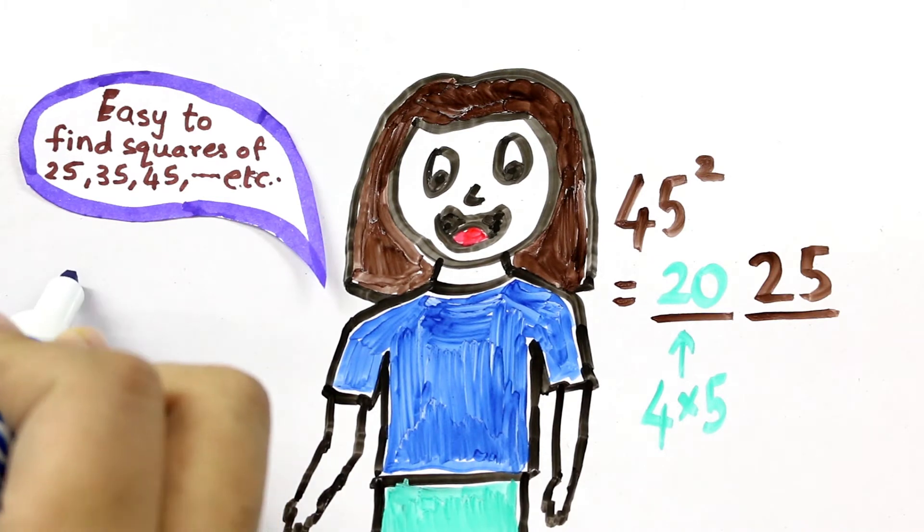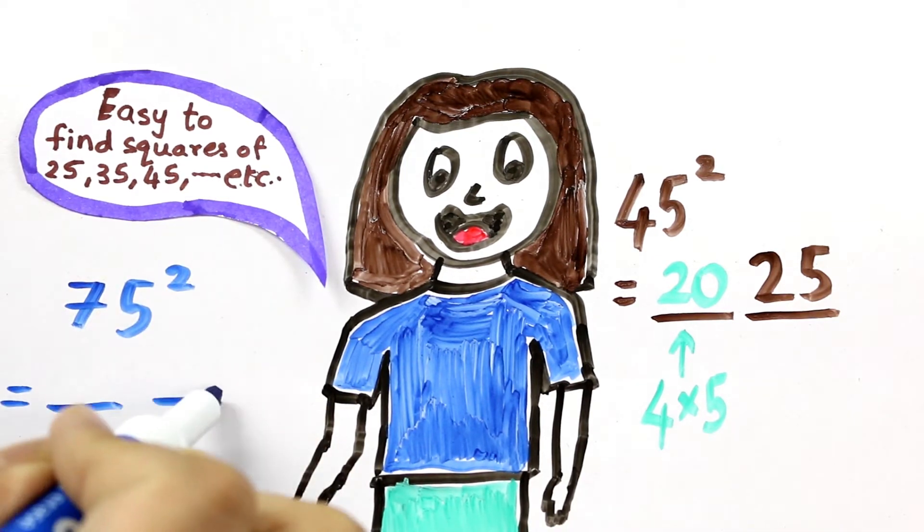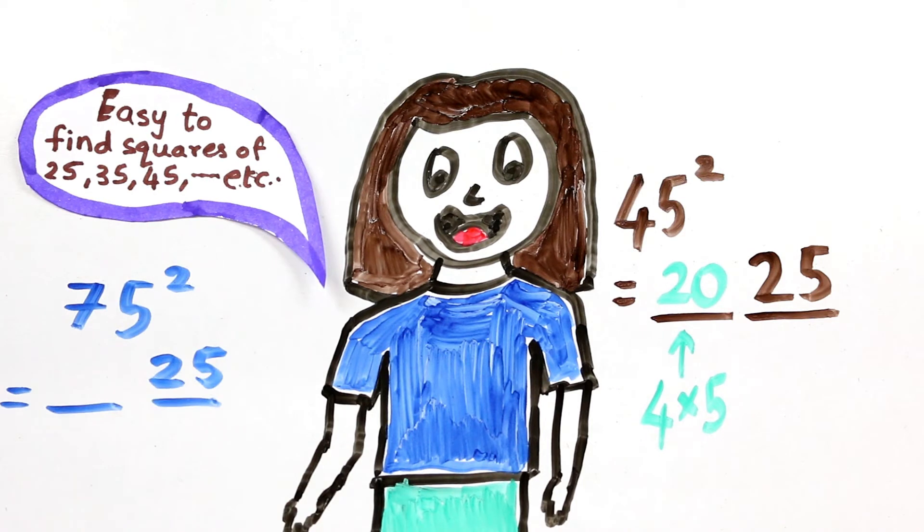So to find 75 square, we'll first write 25 in the units and tens place. And to find the first two digits, we'll look at 7 and multiply it with its next digit, which is 8. So 7 into 8 equals 56.